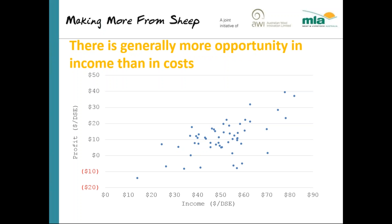Looking at the 2015-16 benchmark results, the left-hand axis shows profit per DSE, and the bottom axis shows income per DSE. Each blue point represents a single flock benchmarked in that year. Visually, as you move from left to right, profit goes up from zero up to $40 a DSE, and there's a reasonable trend line through that data.